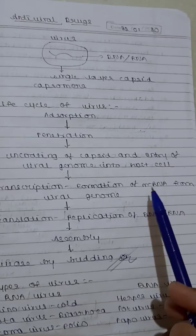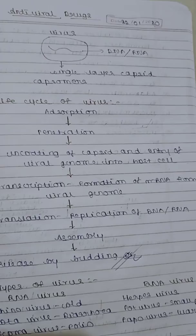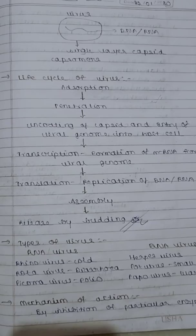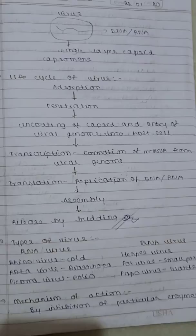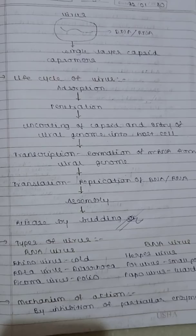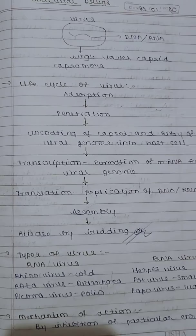Next is transcription: mRNA (messenger RNA) is formed from the viral genome — from viral RNA or viral DNA. This process is called transcription. Next is replication: the viral DNA or RNA gets replicated and multiplied. The outer capsid covering is then formed, and the genetic material gets assembled into the capsid and released by budding. This is the lifecycle of the virus.